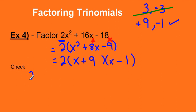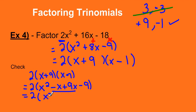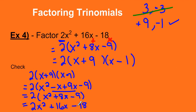Let's check: 2 times x plus 9 times x minus 1. FOILing the two binomials — first: x times x is x squared; outside: x times negative 1; inside: 9 times x; last: 9 times negative 1. Collecting like terms: negative x plus 9x gives 8x minus 9. Now we multiply everything by 2 using the distributive law: x squared times 2 is 2x squared, 8x times 2 is 16x, and negative 9 times 2 is negative 18. Is that what we started with? Yes it is, so we have factored this correctly.